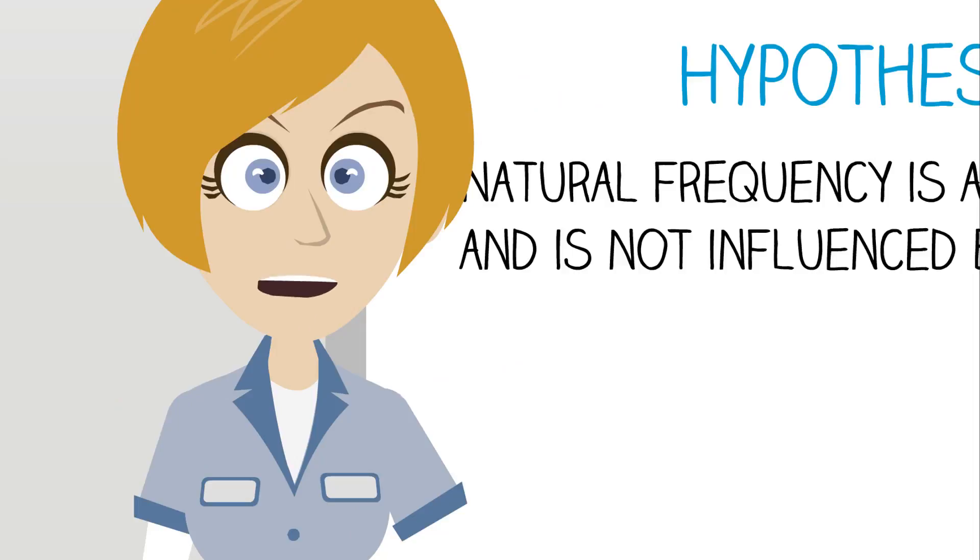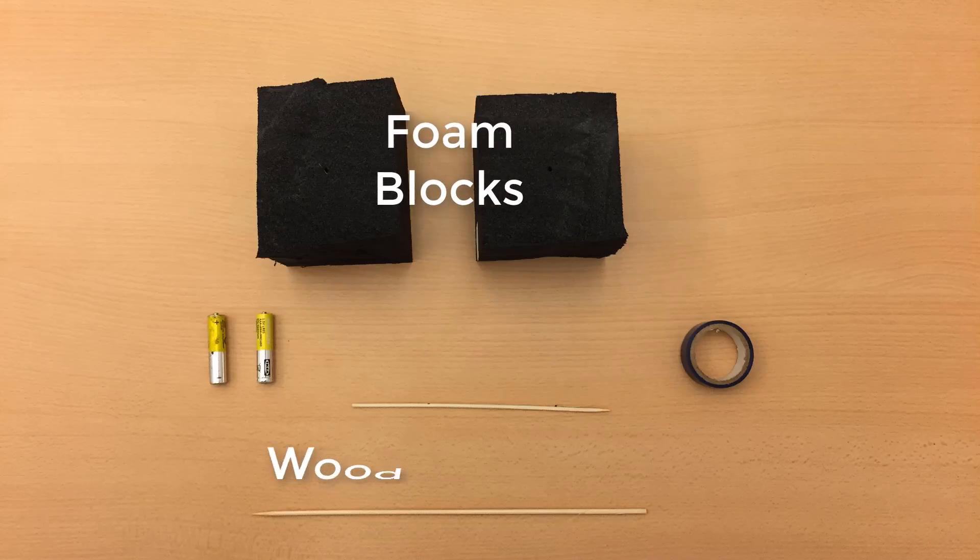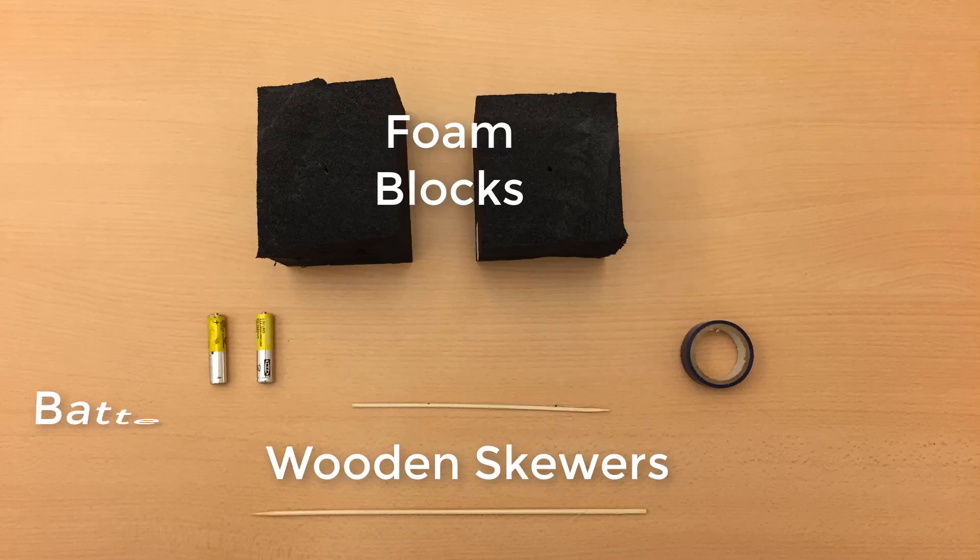While I don't have a bridge lying around to test, and you probably don't either, we can use some smaller items for our experiment. I have here two foam blocks, two wooden skewers of different sizes, two batteries, and a roll of tape. Put together, they form our two test specimens.